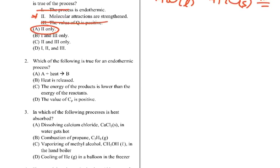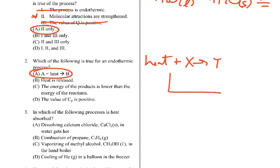Number 2: which of the following is true for an endothermic process? Endothermic means heat is on the left side, so A + heat turns into B — that's true. Heat is released? No, that's exothermic. The energy of the products is lower than the energy of the reactants? No — for an endothermic reaction, that's uphill, so products are higher. The value of C_P is positive? That's always positive regardless of endo or exo. So the answer is A.